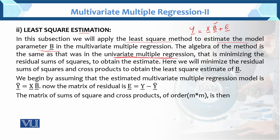Since we already did the univariate case, in multivariate we will just use those results. That is: minimizing the residual sum of squares to obtain the estimate. Basically, we have to estimate the model parameter — we will estimate the model parameter that minimizes the residual sum of squares. Here we will minimize the residual sum of squares and the cross products to obtain the least square estimate of b, the same work we did in multiple regression.